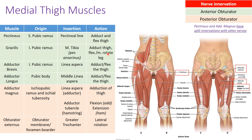Working from lateral to medial through the medial thigh muscles, we start with the pectineus — the most superficial and most lateral. It arises from the superior pubic ramus, specifically from the pectinate line on the pubic bone, and inserts into the pectineal line of the femur. The action is to adduct and flex the thigh.